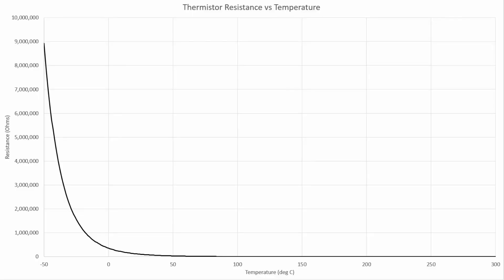To understand how we convert from a resistance tolerance to a temperature tolerance, we need to revisit the resistance versus temperature curve for the thermistor we're looking at. What we're really interested in here is the derivative, or the slope, of the resistance versus temperature curve. I've demonstrated this with three triangles. At very, very low temperatures, a large change in resistance only changes the temperature a small amount — so if our resistance tolerance is large here, our temperature tolerance will still be very small. As we get closer to ambient conditions and then out into our hot end temperatures, a very small change in resistance equals a large change in temperature.